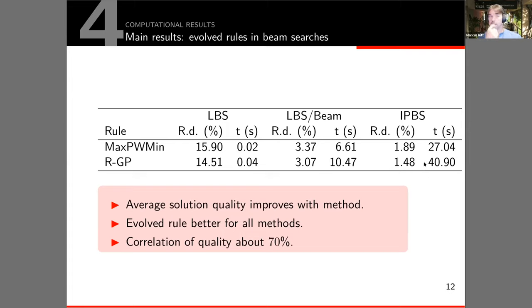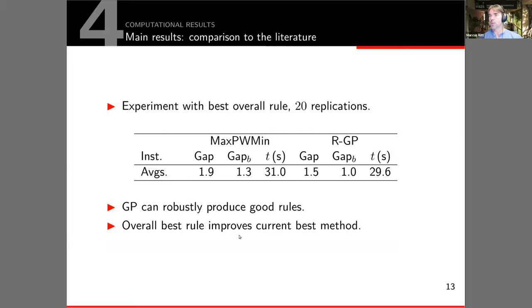Most importantly for us here, this rule was evolved in a simple lower bound search, but the improvement transfers to the iterated probabilistic beam search. That allows us to evolve these rules, which would be otherwise impossible due to computational complexity, in a simpler context and transfer it to the state-of-the-art heuristics. The correlation of the solution quality is about 70 percent.